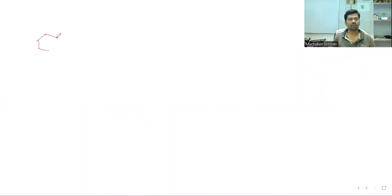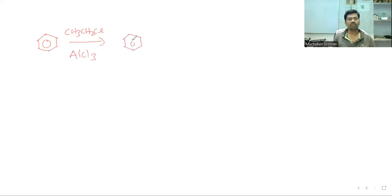Let me give you some examples based on this concept. Benzene plus CH3CH2Cl in the presence of AlCl3 — the product is ethylbenzene (with an ethyl group, CH2CH3, attached to the ring), and HCl is the byproduct.